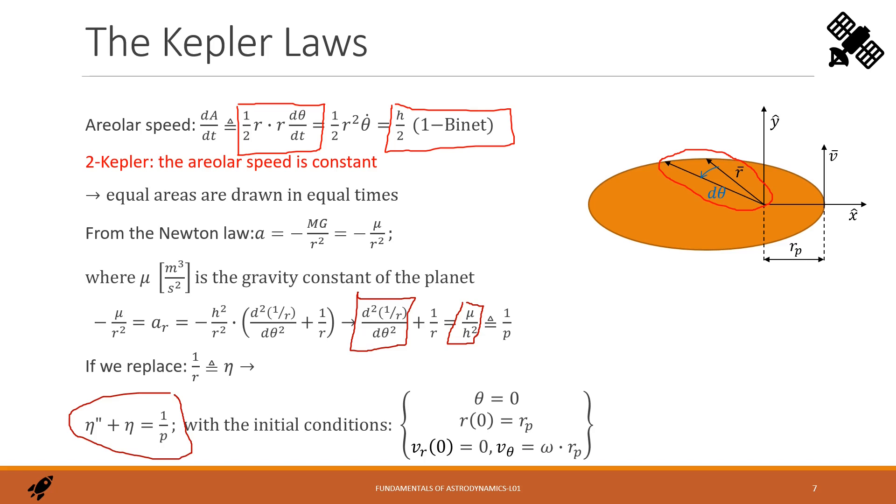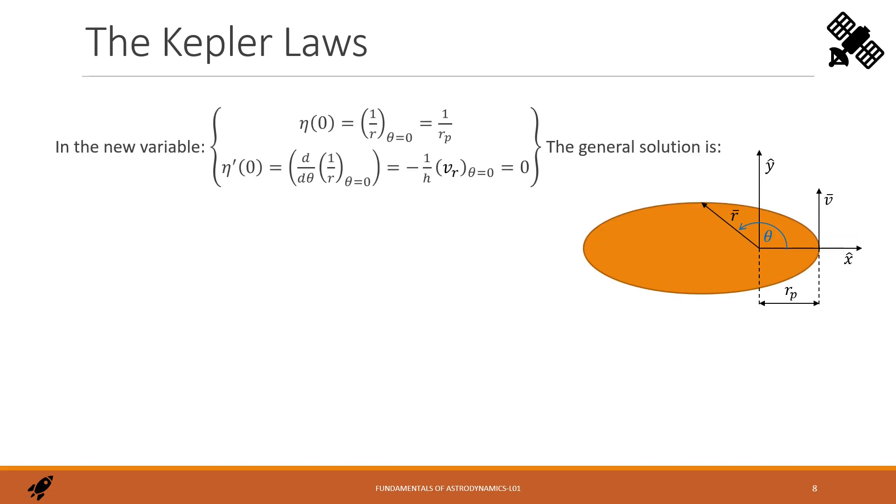Let's consider now the initial conditions for theta r and for the velocity. We say that for theta equals zero r is r p. We are in this position. We say also that the velocity is perpendicular to the radius. Also there is no component along r and the component along theta is omega r p where omega is the local angular velocity. Those conditions we need to translate for the function eta. Eta zero is one over r for theta equals zero. And that is one over r p. Eta prime is for definition the derivative of one over r with respect to theta. That is from the second Binet formula negative v r over h. But this is zero for the initial conditions.